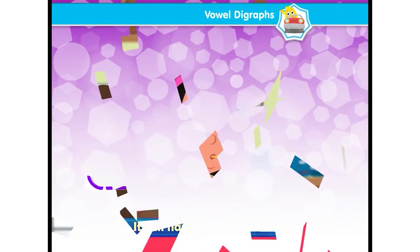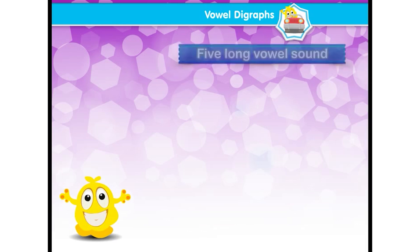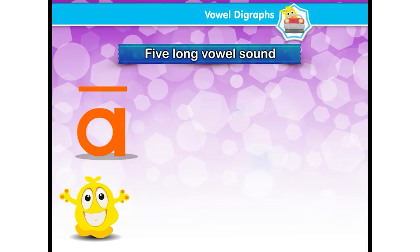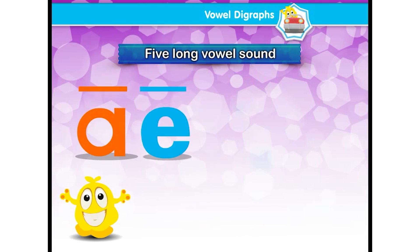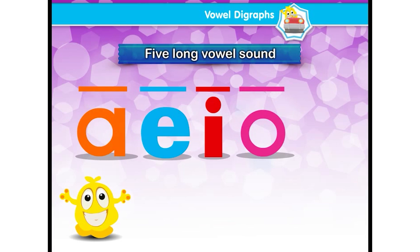Now let's learn vowel digraphs. And here we are going to learn five long vowel sounds: long vowel A sound, long vowel E sound, long vowel I sound, long vowel O sound, and long vowel U sound.